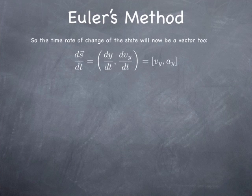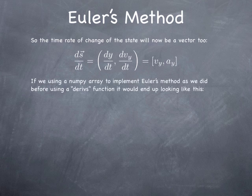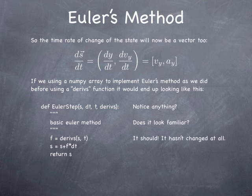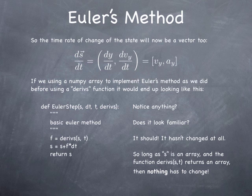If we use Euler's method to estimate what happens, all we have to do is evaluate the derives function, just like we did before, and multiply by the change in time. Now look at that Euler step, and tell me if it looks familiar. It should, because it's the same as it was before. It hasn't changed at all. The only difference is we know now s is a vector, derives is a vector, and it returns a vector. So that makes it easy.